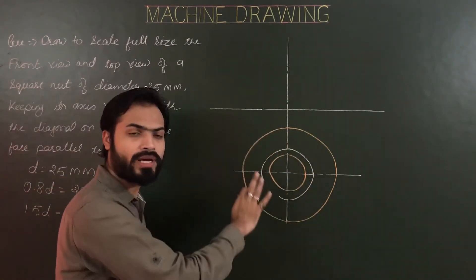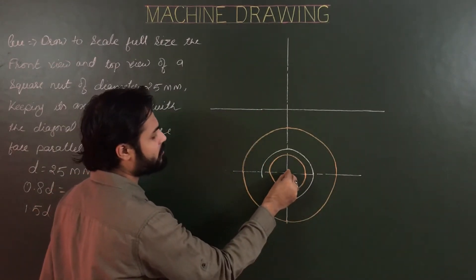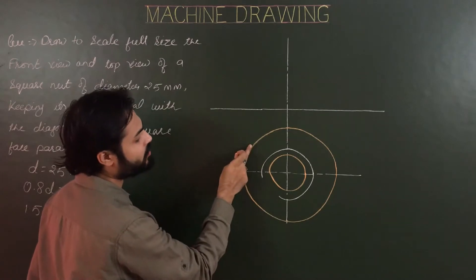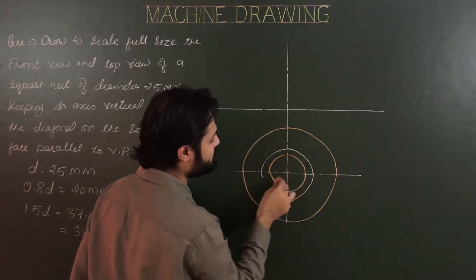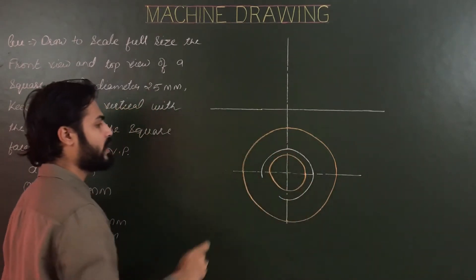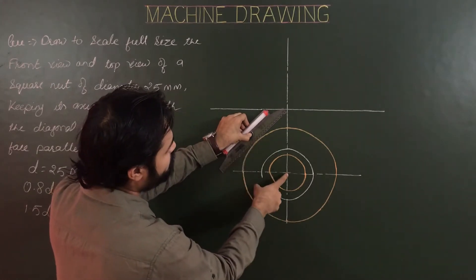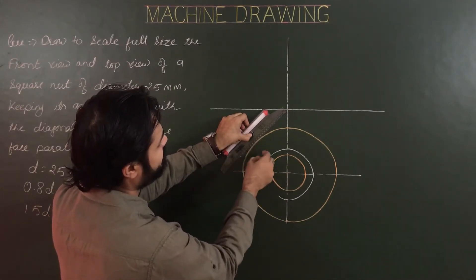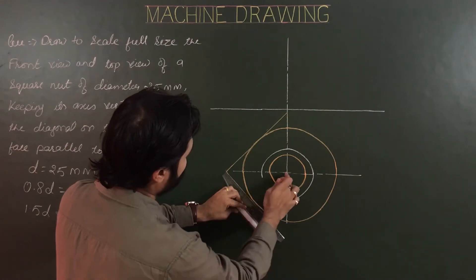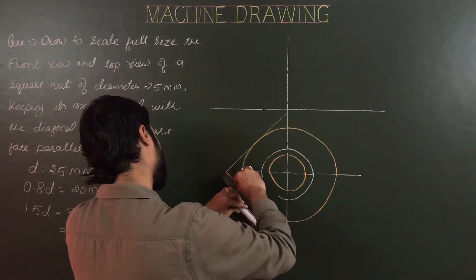Next step: circumscribe a square on the circumference of the chamfering circle. From this point draw a random line at an angle of 45° to get the midpoint of the square. Again mark the midpoint of the square at 45°, and mark all four midpoints of the square. From these four midpoints draw perpendiculars — from the midpoint to the corner, or from the center — perpendicular to that line.